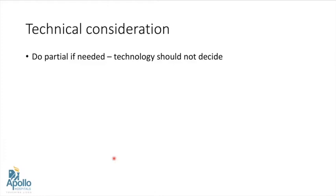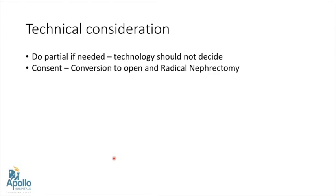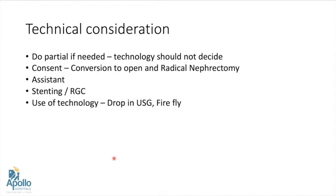We should always attempt partial nephrectomy if the answer is yes, and technology should not decide the form of treatment. Consent for conversion to open and radical nephrectomy should always be obtained. A good assistant is a blessing in robotic surgery. Stenting or RGC is a personal preference — I usually prefer stenting in all my complex cases. Drop-in ultrasound and Firefly also play a very important role.